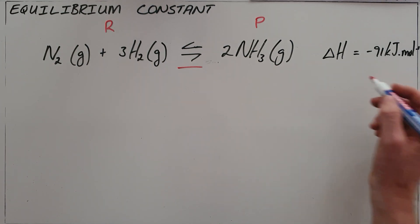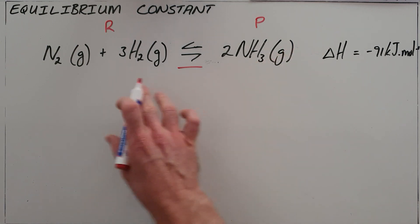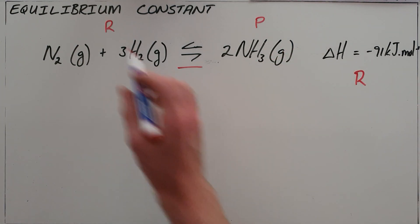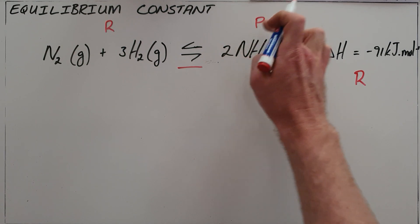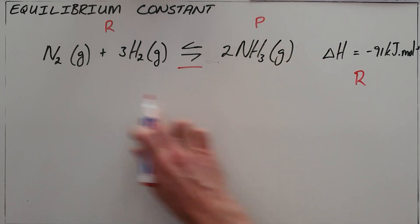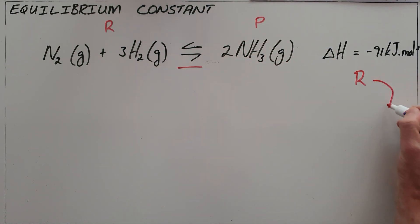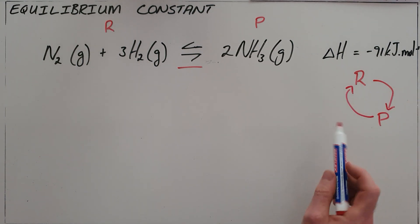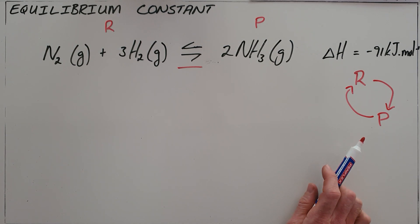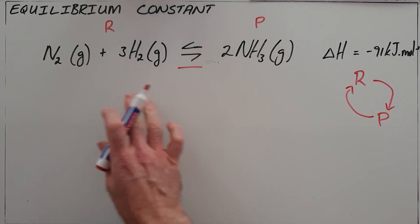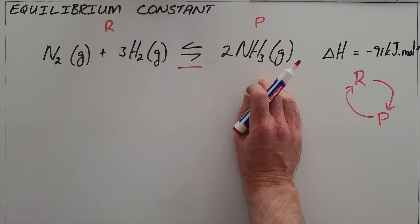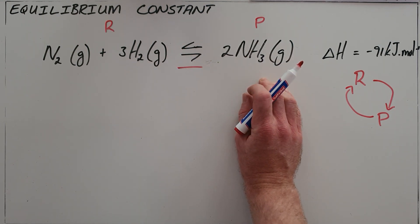What we've also learned now is that some reactions, of which this is one, are reversible, meaning that as the reactants produce products, the products are then able to react and produce those reactants again. This creates a cyclical process known as chemical equilibrium, which is when the rate of the forward reaction is equal to the rate of the reverse reaction.